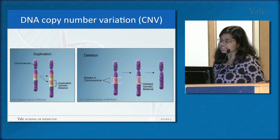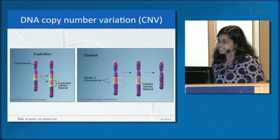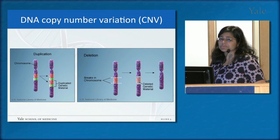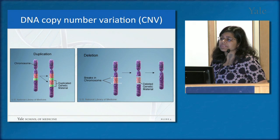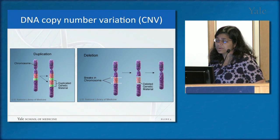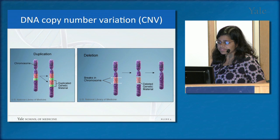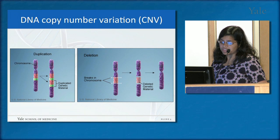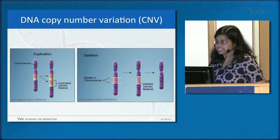Sequence variants are not the only type of changes we look for. We also look for copy number variants, or CNVs. A duplication is where material on a chromosome is duplicated — this might be benign, or very damaging if genes in that region are now present at an increased dose. A deletion is where material is lost from one arm of the chromosome — you may then be missing genes that are important and expressed in the brain.